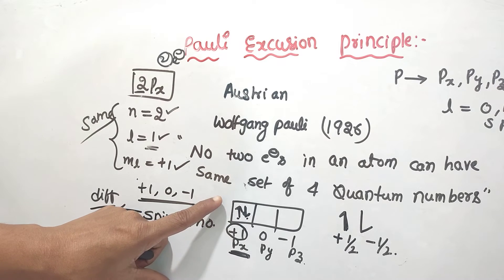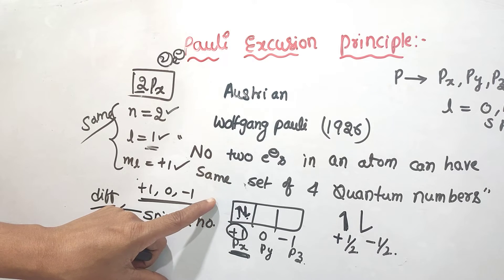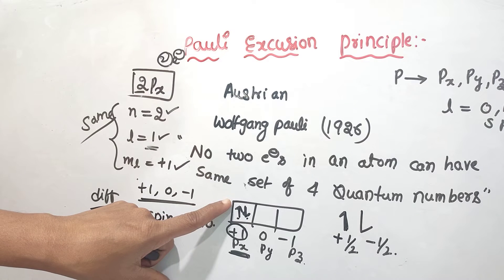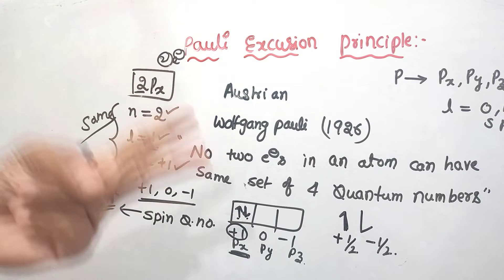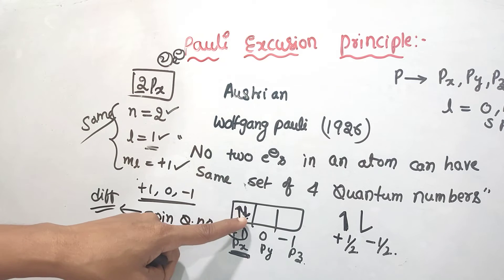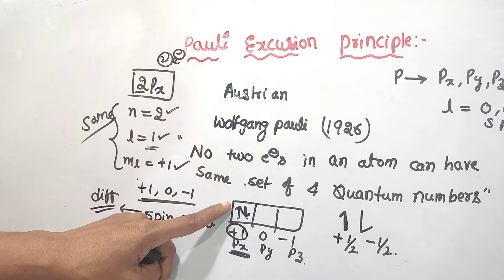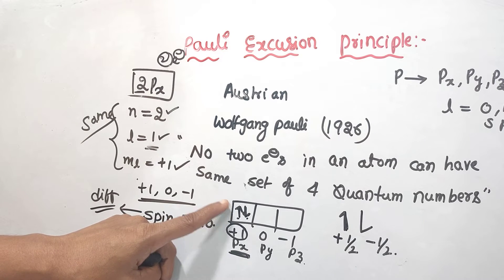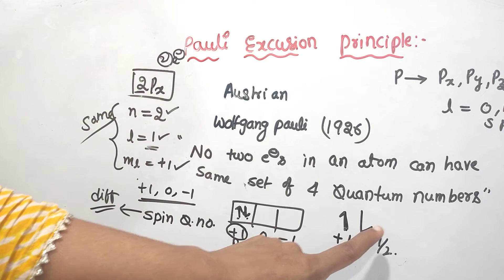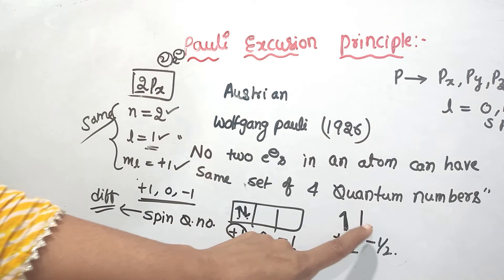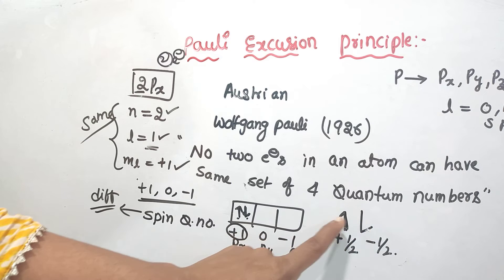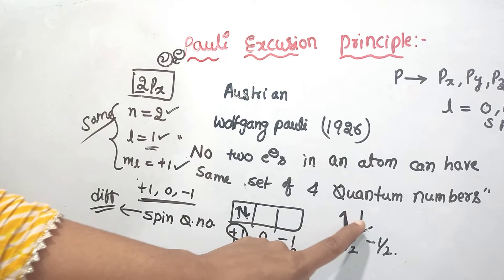So what do we say from Pauli Exclusion Principle? Only 2 electrons can exist in the same orbital, and these electrons must have opposite spins.